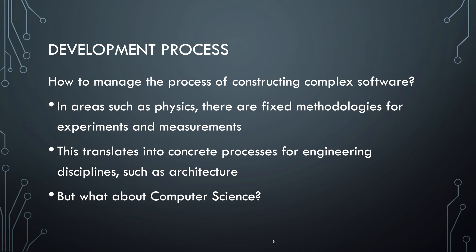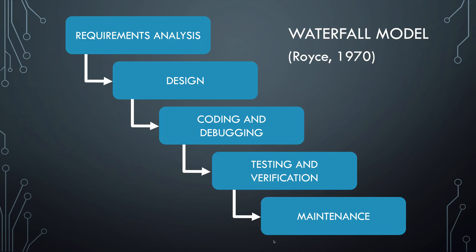So what about computer science? Computer science also has processes that have evolved over the years. It's still a relatively young field, as opposed to a field like physics on which scientists have worked for centuries already. One of the first widely used development processes in computer science is the waterfall model from 1970.